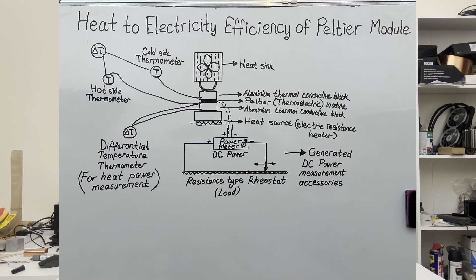In this experiment I'll use an aluminium conductor block with a thermal conductivity of 24 watts divided by degrees Celsius, which I have determined by testing before. The principle here is to calculate the heat power according to the temperature difference between two points on the conductor block.